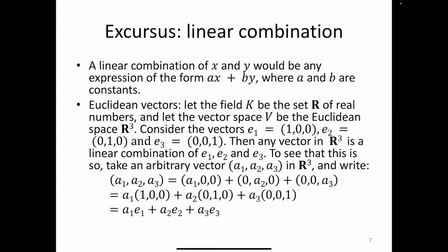Let's look at a linear combination more closely. Suppose you have a field k — for example the real numbers — and a vector space v over k. The elements of v are called vectors and the elements of k are called scalars. If v sub 1 through v sub n are vectors and a sub 1 through a sub n are scalars, then the linear combination is: a sub 1 times v sub 1, plus a sub 2 times v sub 2, and so on up to a sub n times v sub n.